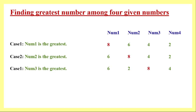Case three is when number three is the greatest. Number three is greater than number four and also greater than number one and number two, but we don't need to check for those. If number three was less than number two, it would have satisfied case two; if less than both, it would have satisfied case one. So checking number three with respect to number four is sufficient.